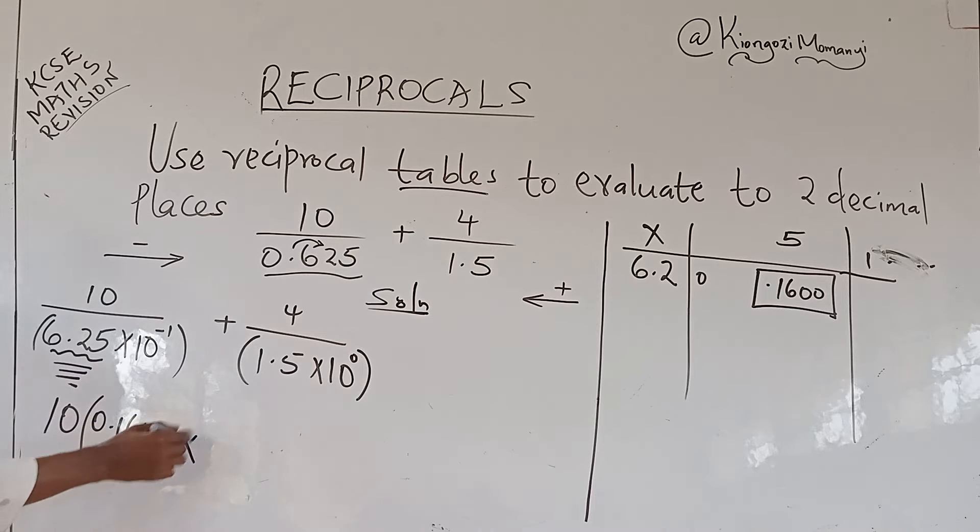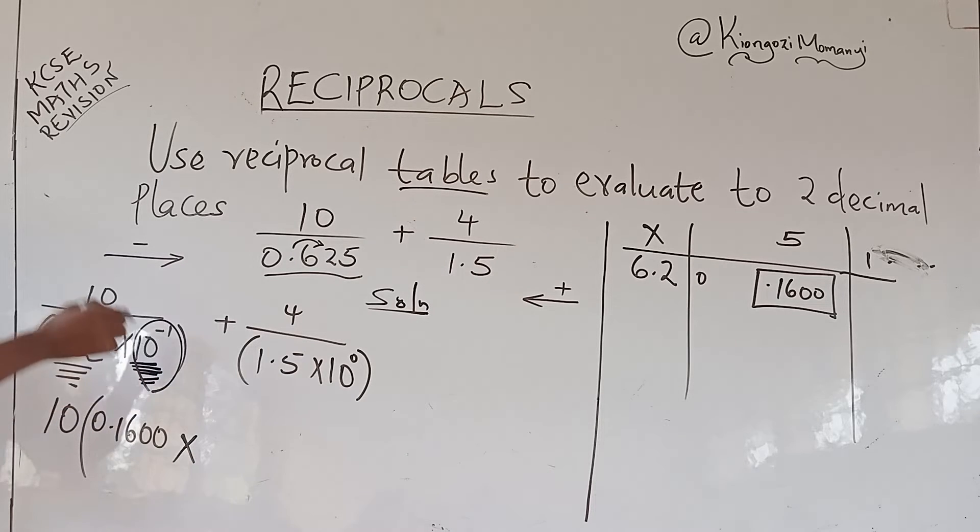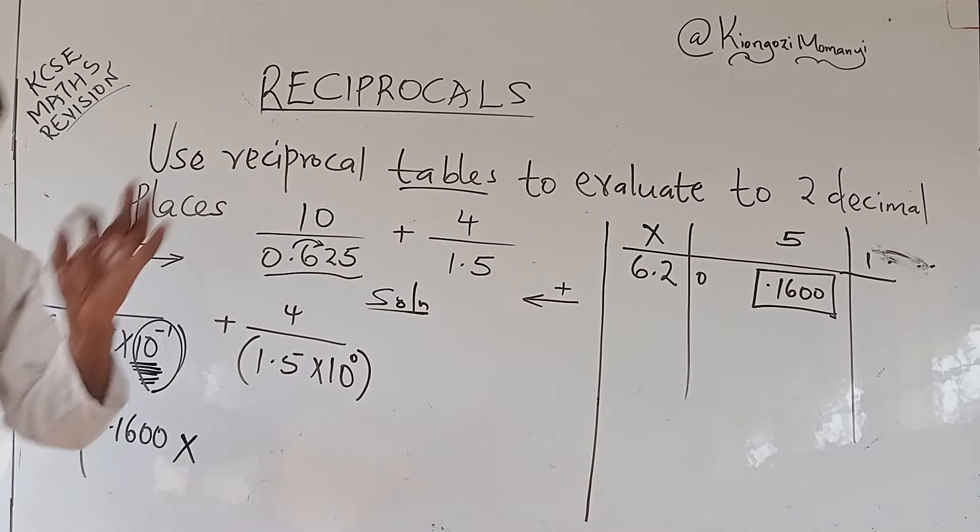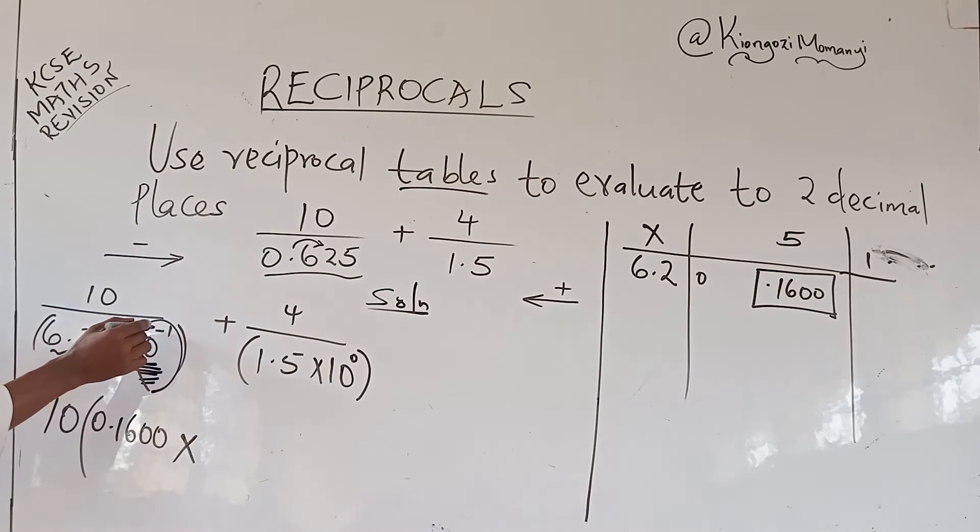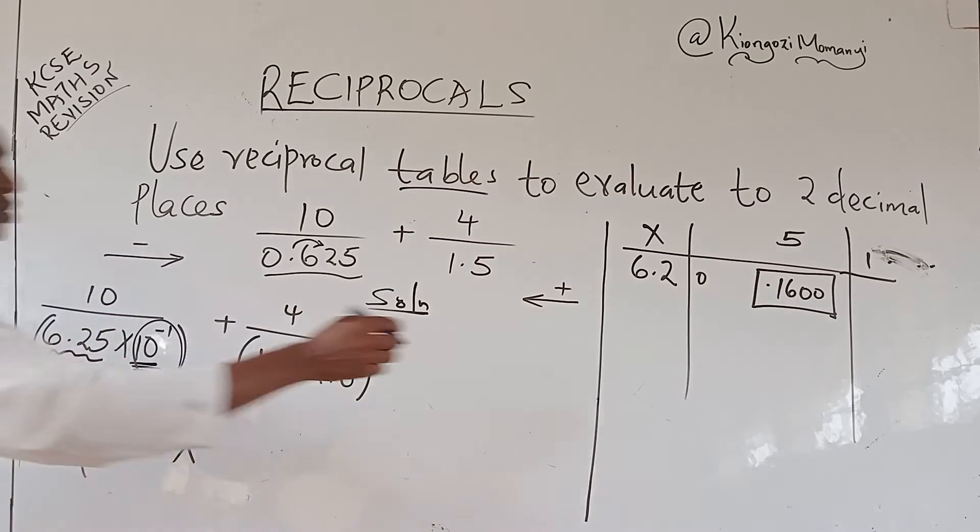From there, you multiply by, there is also the reciprocal of this. The reciprocal of 10 power negative 1. What happens? You cannot read that from the table. So what you do, you will remove this. Because I told you,